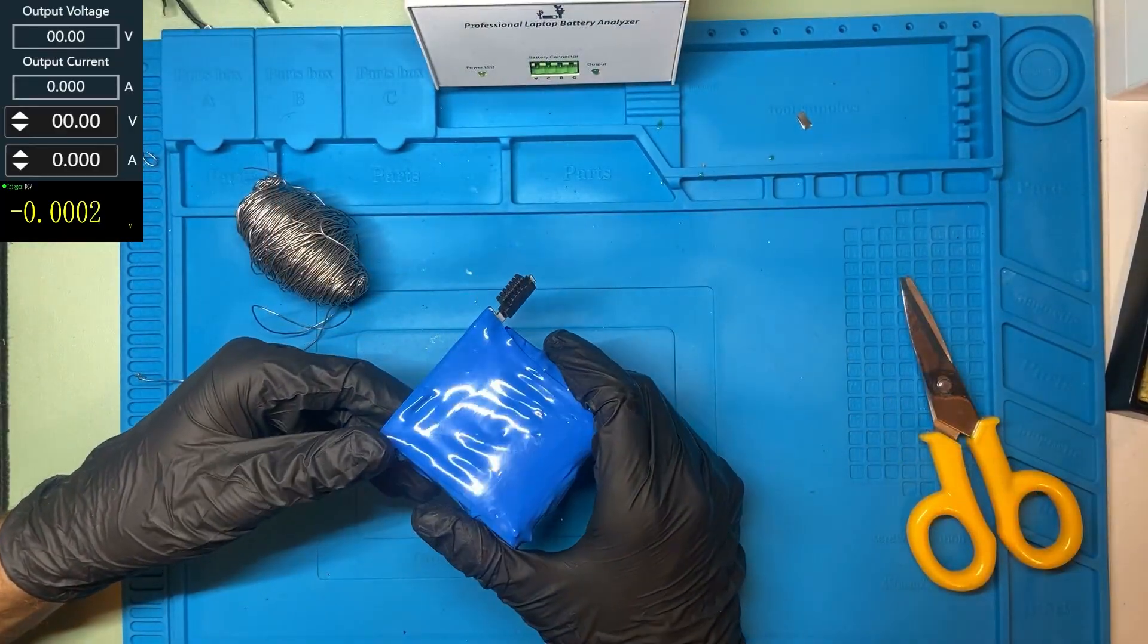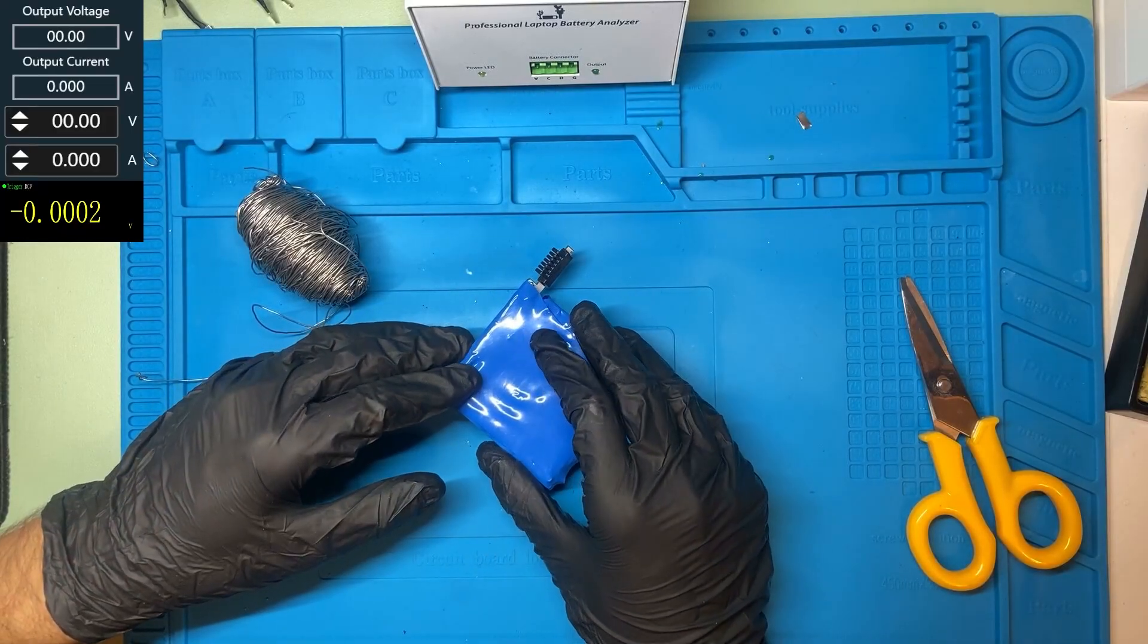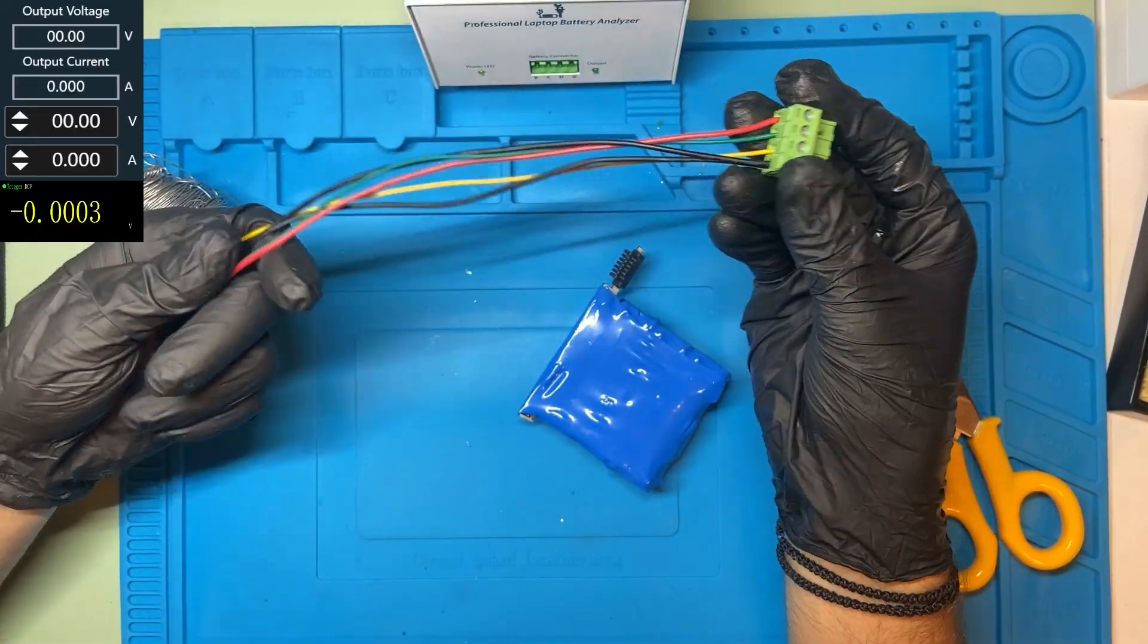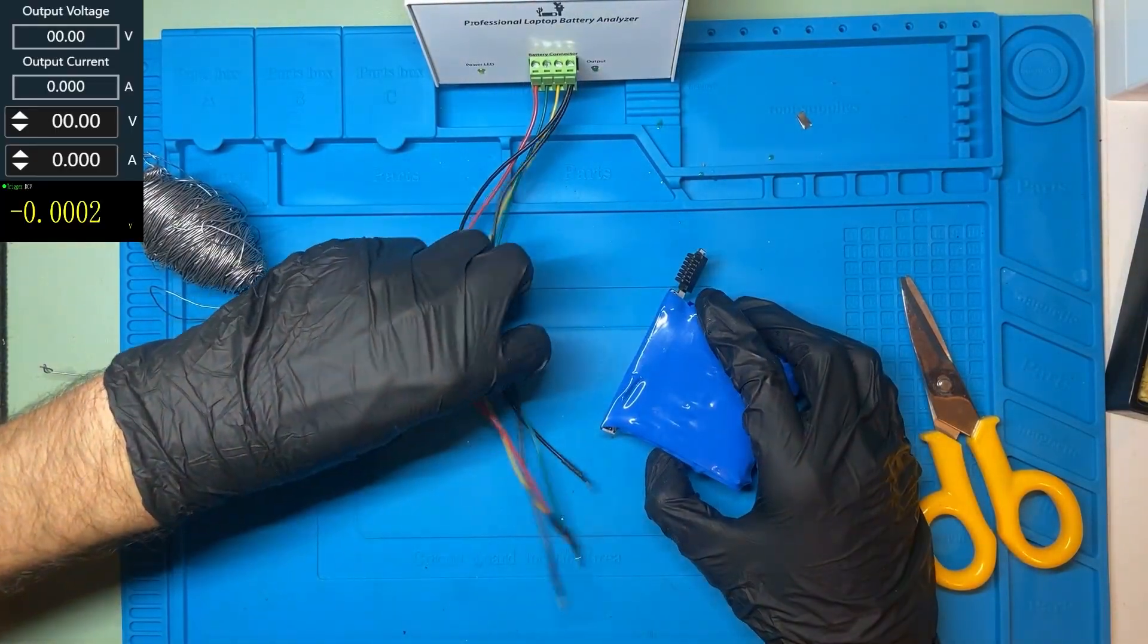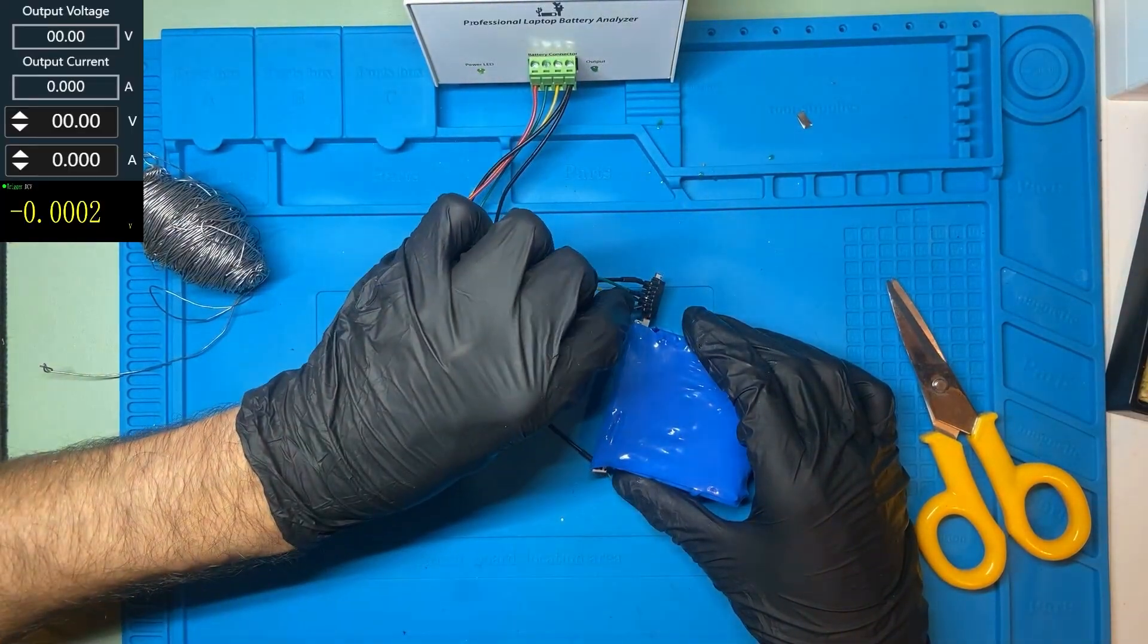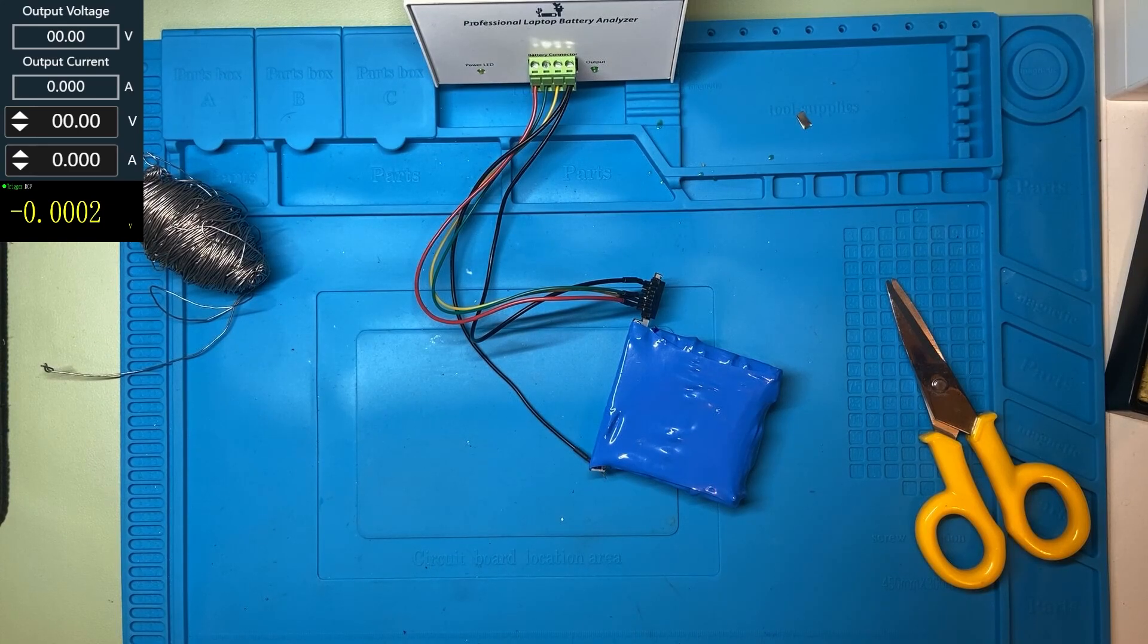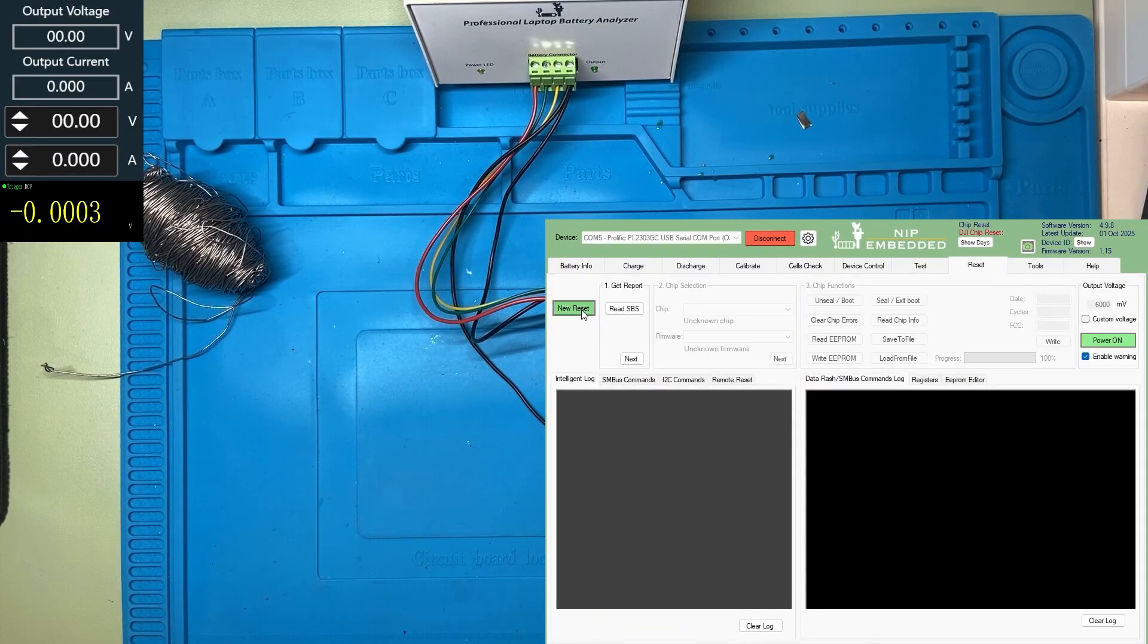And that's our final battery. Now I will connect the battery to the NLBA device to analyze it. The chip needs to be reprogrammed to reflect the new cells. I will change the capacity cycle counting data. Let's connect the battery. I will use this type of connector. I already know the pinout. Let's connect it. Let's see on this software what we have. Start reading. Look, our battery has been read successfully.